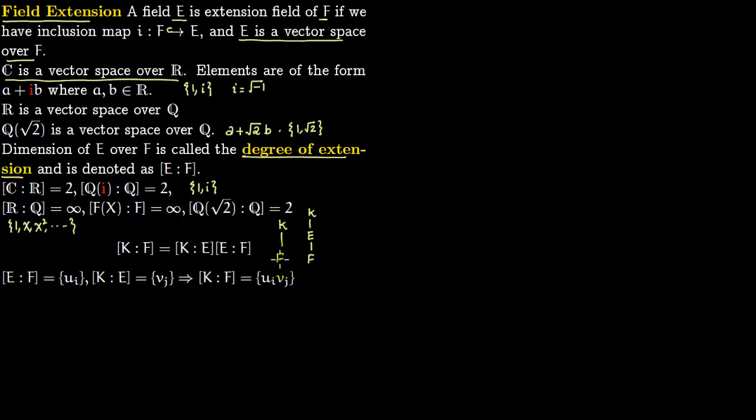You have some degree of extension here and you have degrees of extension here. Say this is n, that is [E:F] = n, and then [K:E] = m, so [K:F] = m·n.